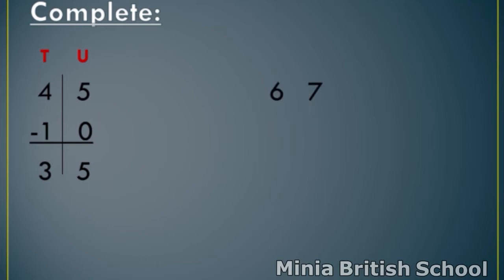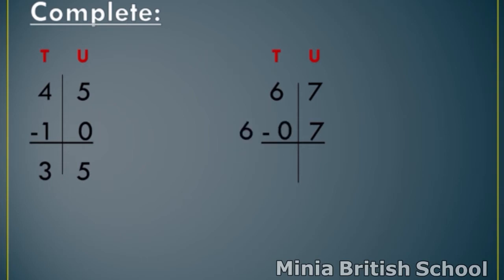Another example: sixty-seven minus seven. Write T and U, and make a line. Start from units. Seven minus seven — remember, any number minus the same number equals zero. So, seven minus seven equals zero. Write zero under units. And in tens, you have only number six. Six minus nothing will be six — the same number. So, the answer is sixty.